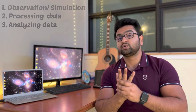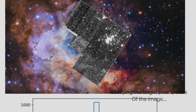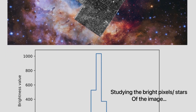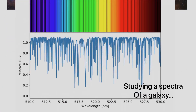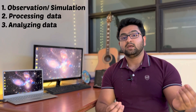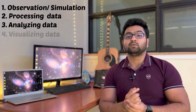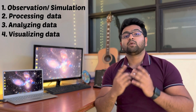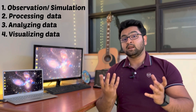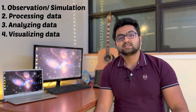Number three, once you get your processed data, would be to analyze that data and make sense out of it — what's going on, what are the science questions you're asking, how can you address those questions using the data you have. And lastly, number four, once your analysis is done, you would want to plot and visualize the data in a meaningful way.